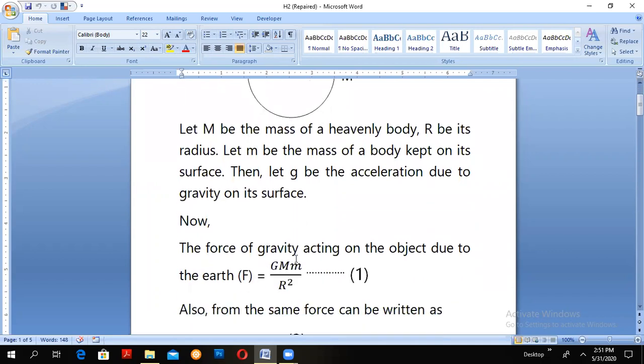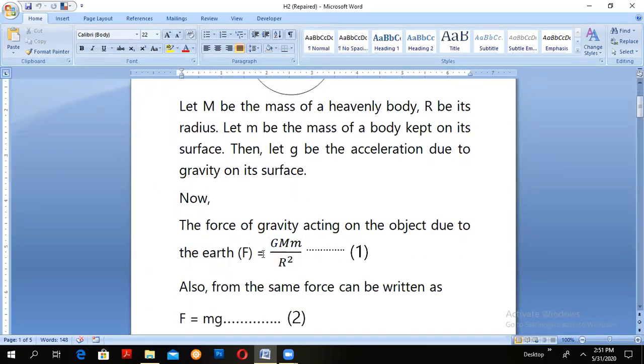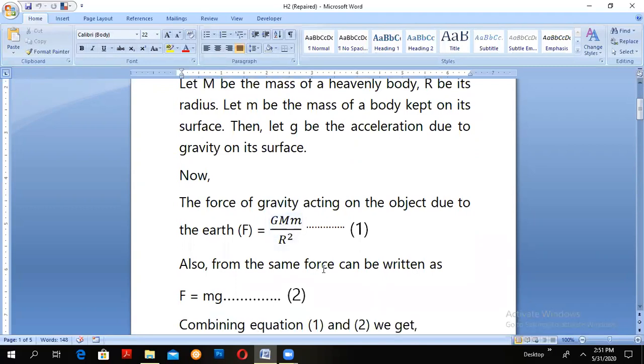Now the force of gravity acting on the object due to the earth F will be given as GMm upon R square which can be considered as equation 1. Similarly the force experienced by the body can be written as F equals to mg.